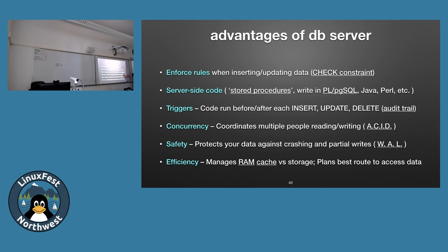Concurrency — multiple people doing multiple things simultaneously — is addressed by the ACID properties; look up ACID in Wikipedia for the full concepts. The database server handles all of that for you. The write-ahead log handles safety from crashes. And finally, efficiency: the database manages what's stored on disk versus in memory and is super optimized for it. Programmers think they're clever, but they're not as clever as the people who've spent decades on Postgres. Do as much work as possible in the database rather than in your app — you'll get huge performance gains.